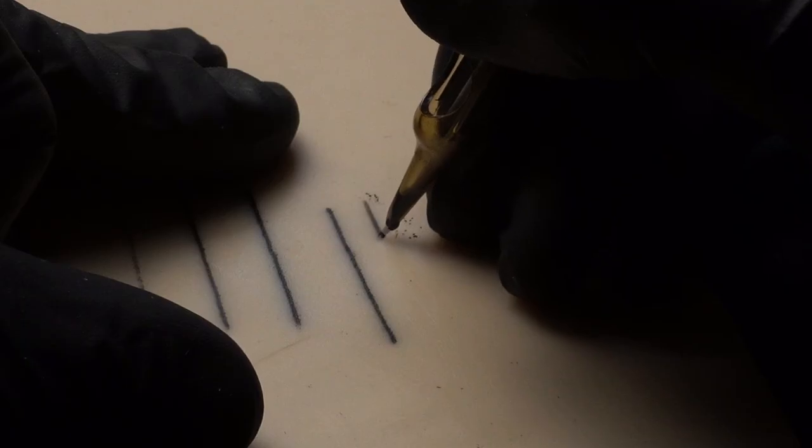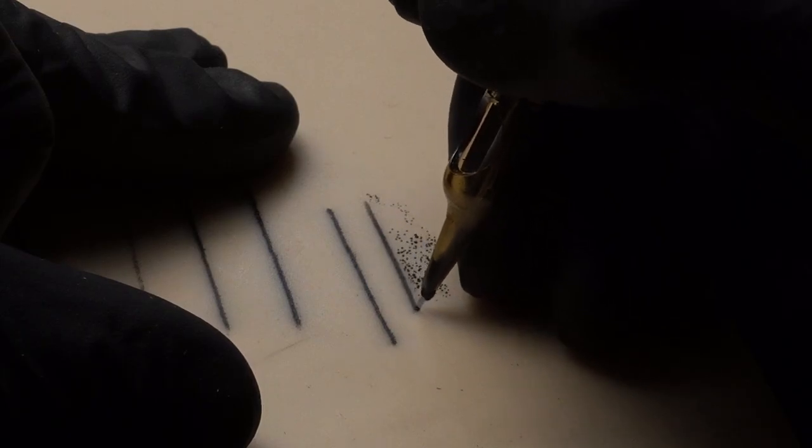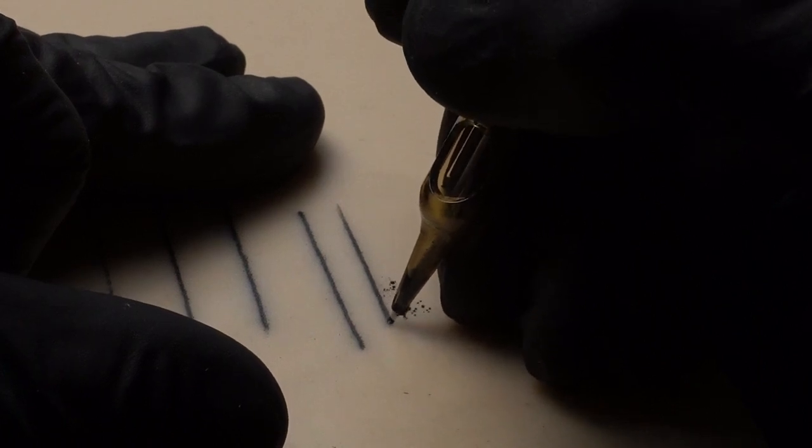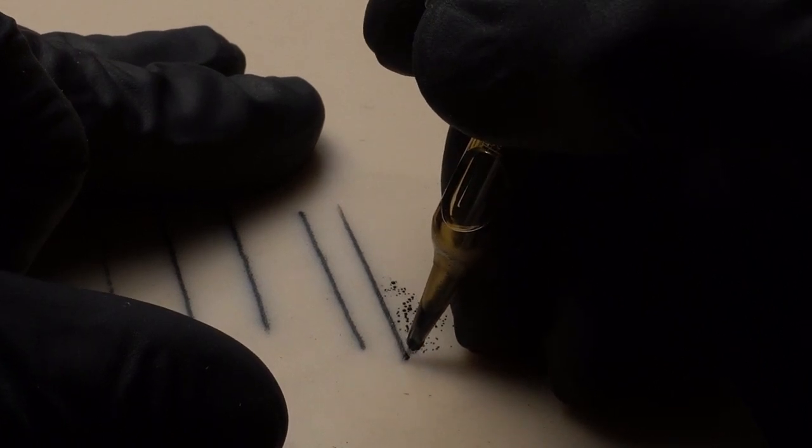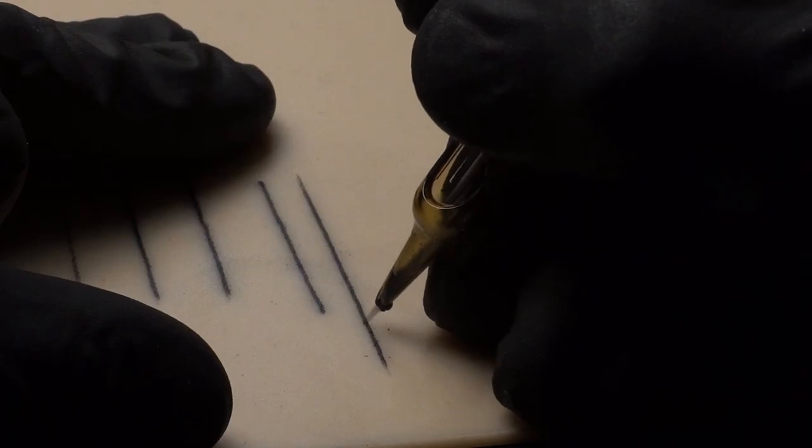Instead you want to taper in and out of your lines. Then you want to start the second line a bit further up and not exactly where the first one ends. Doing this will allow you to connect lines seamlessly so you don't need to worry about the length of the lines you need to do anymore.